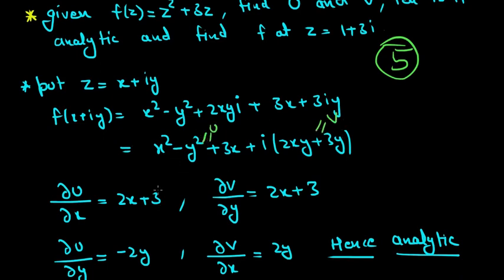Now we have to check for Cauchy-Riemann equations. We find ∂u/∂x which is 2x plus 3, and ∂v/∂y is 2x plus 3. These are equal, hence the first condition is satisfied.